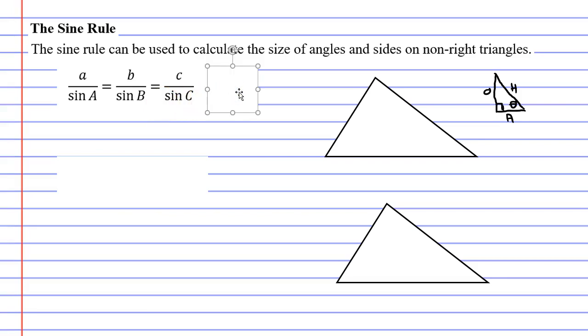Usually you block one part of it out, so you might block out c over sin C and just use the formula a over sin A equals b over sin B. You might block out a over sin A and use b over sin B equals c over sin C, or you may even decide to block out the middle part of the formula. So you really only use two of the fractions. You don't use all three when you solve it.